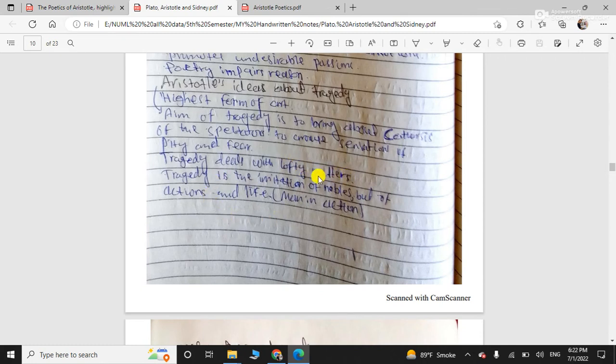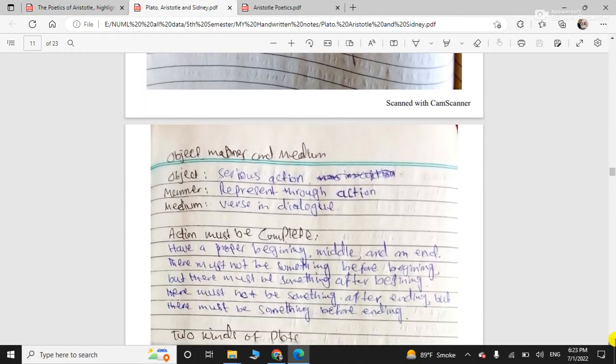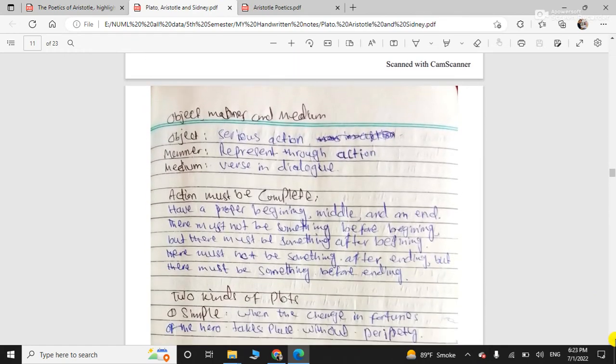So, tragedy deals with the lofty matters. Lofty and grand. And tragedy is the imitation of nobles. What should be the object? Object should be a serious action. And the manner represents through action. And the medium? Verse in dialogue.